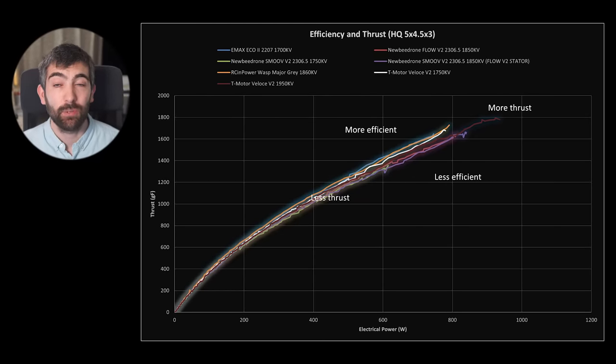This is the same chart but this time I've added some more motors for comparison. So we can see that I've added the T-motor Veloce V2 1750 and 1950 KV and the Emax Eco 2 and RC Empower Wasp Major 1860 KV. And what we can see is that in general the Newby Drone motors are falling behind some of these other motors in certain respects so they are a bit less efficient than most of the 1750 KV motors and in fact a little bit less efficient even than the Veloce V2 1950 KV and they don't have the top end power of let's say the Wasp Major 1860 KV or certainly the Veloce V2 1950 KV. So that indicates that these motors perhaps are not quite as magnetically optimized as they could be and that obviously the lower strength of the bonded magnet is also hurting the Smooth V2 compared to the sintered magnets that these other motors are using.